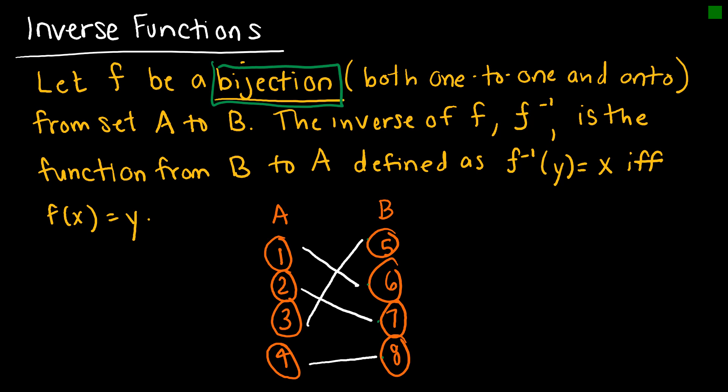And the inverse, and note the way that we write this, F to the negative one, which just tells us that is the inverse function, is the function that maps from B to A such that, essentially, it would look like this. A is one, two, three, four.